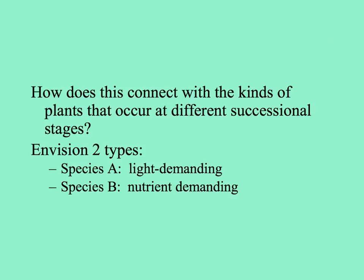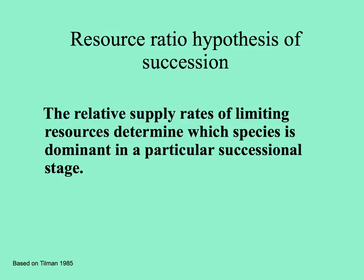Consider two different kinds of plants: species A that needs a lot of light, and species B that needs a lot of nutrients. This is essentially Tillman's resource ratio hypothesis of succession—the relative supply rates of limiting resources determine which species is dominant at a particular successional stage. Those that need a lot of light are common early in succession, but are then outcompeted as nutrients increase by plants that need nutrients and create shade on the light-demanding species.